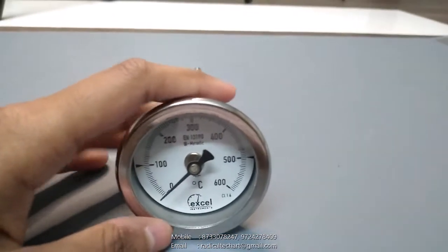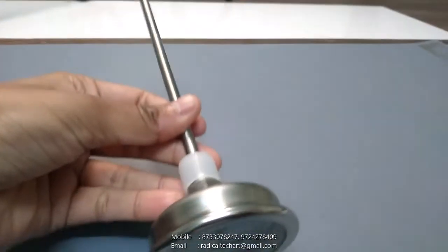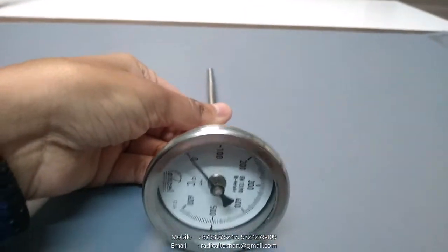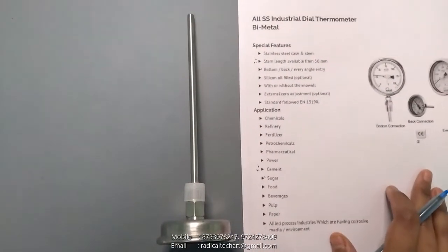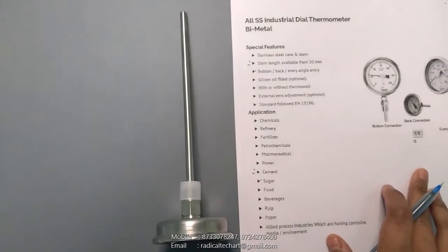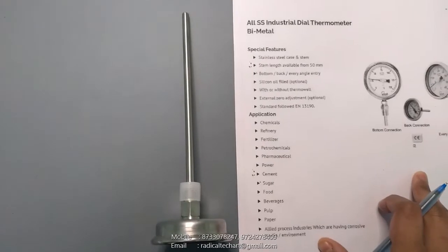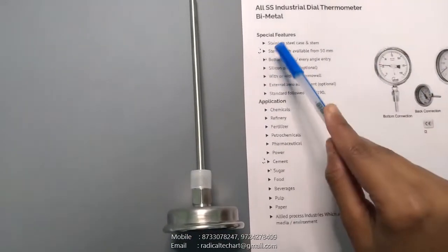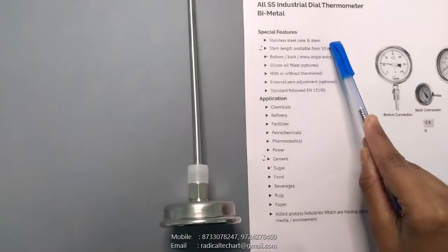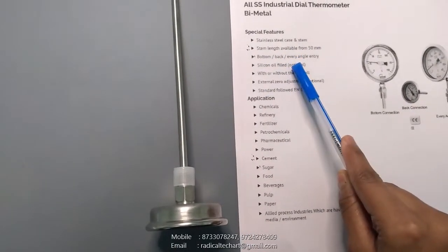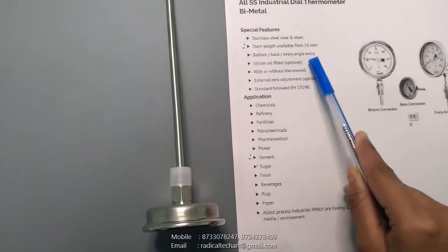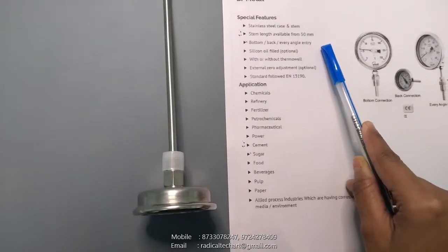Let's talk about its features. You can see here special features for temperature gauge: stainless steel case and steam, steam length available from 50mm, bottom or back or every angle entry, silicon oil filled optional.